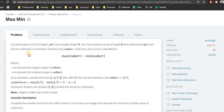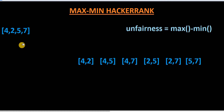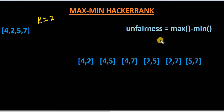Let's start with the naive approach using this example: 1, 4, 7, 2, 5. I have written down the elements in the array, and with k equal to 2 we will create subsets of two elements. I have drawn the subsets and added the definition of unfairness. To create subsets, we take a for loop and for each element we add another element.